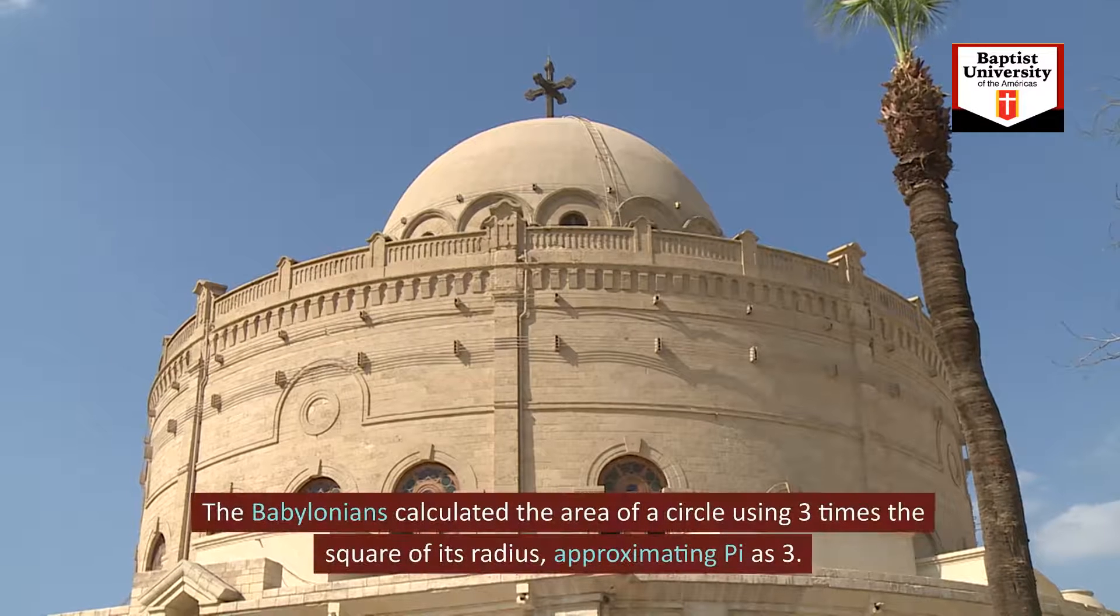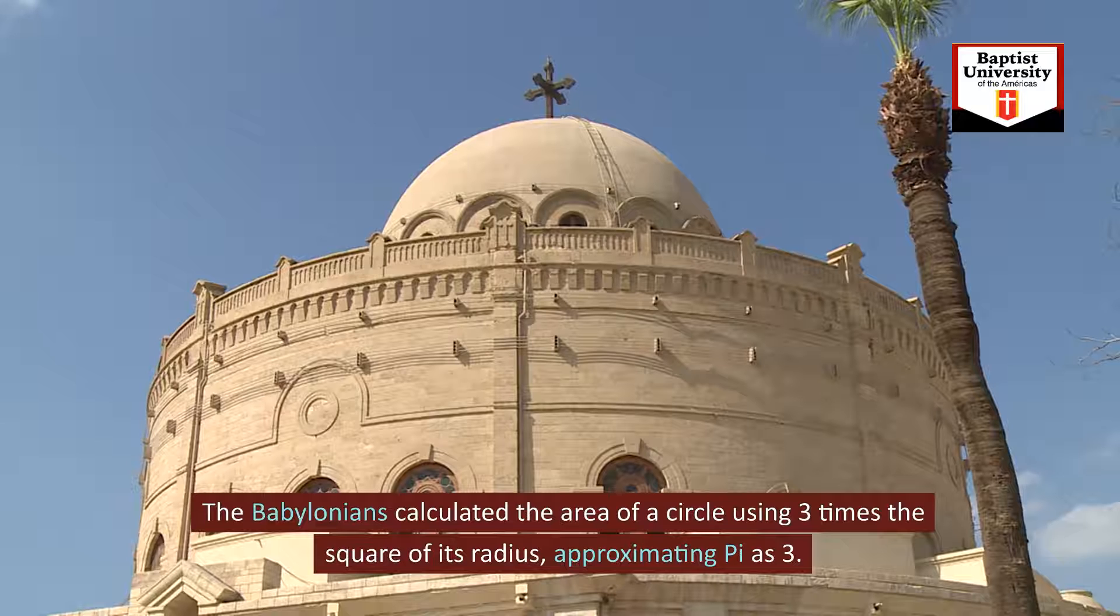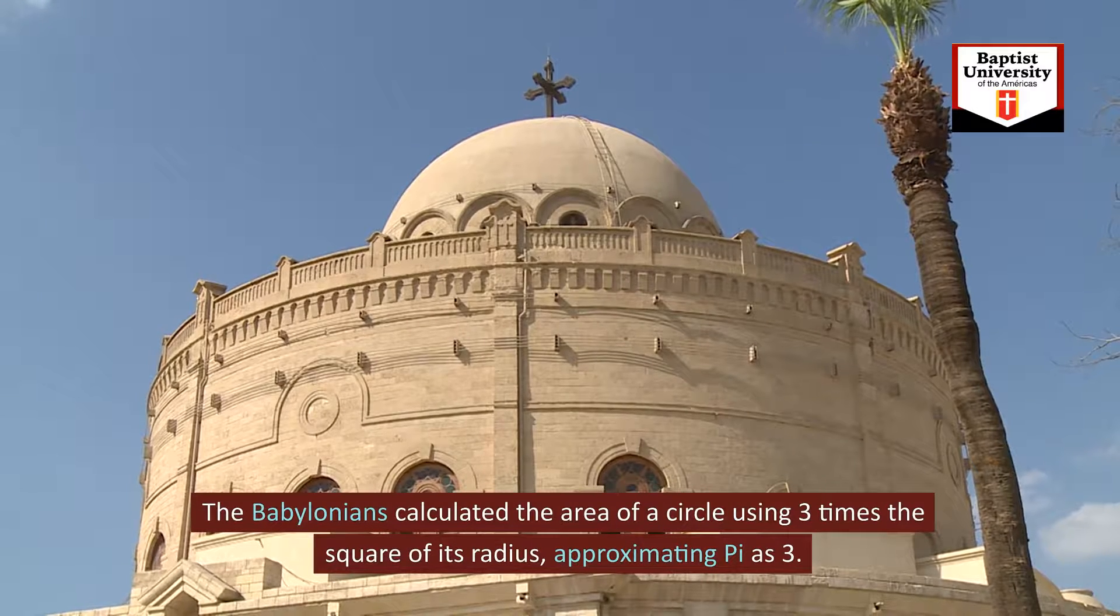The Babylonians calculated the area of a circle using three times the square of its radius, approximating pi as 3.